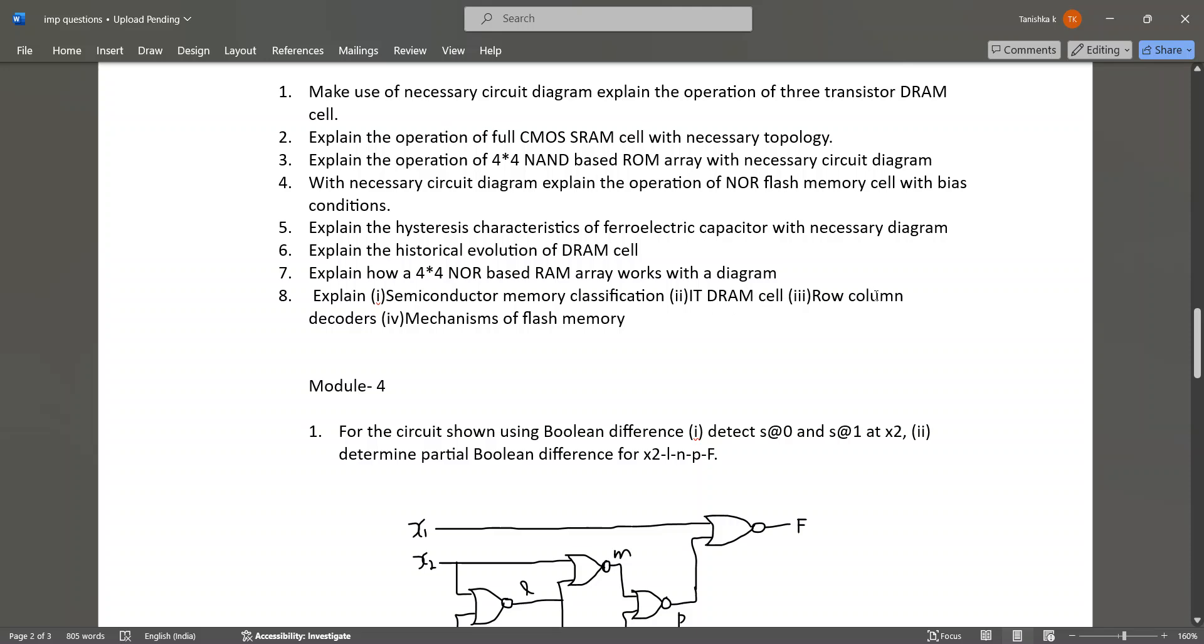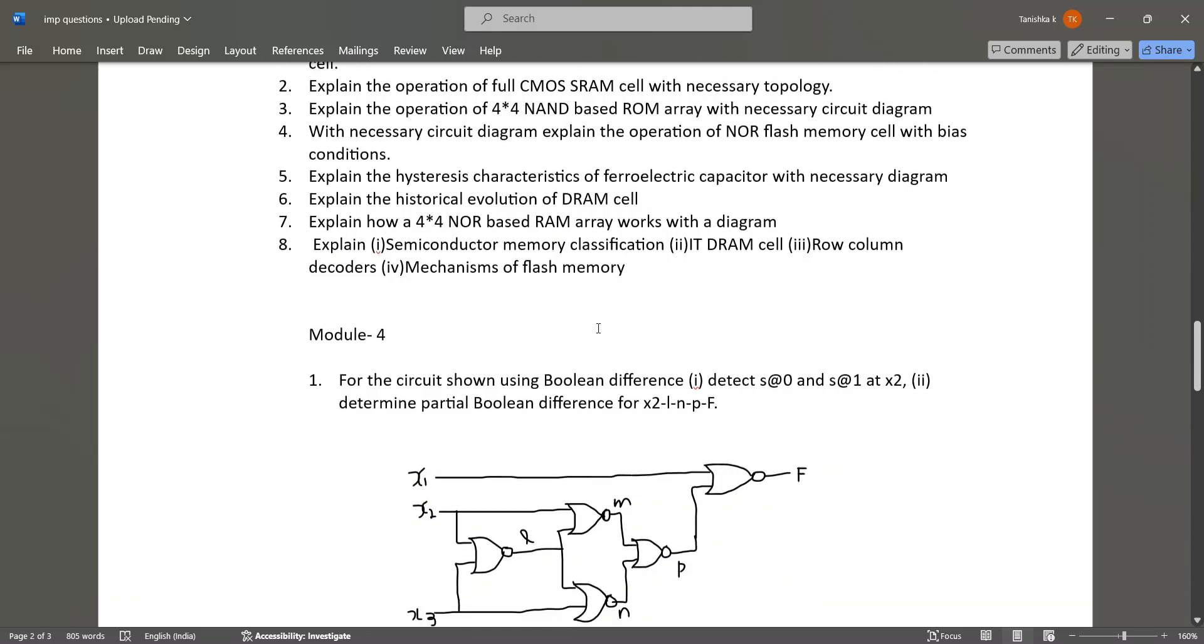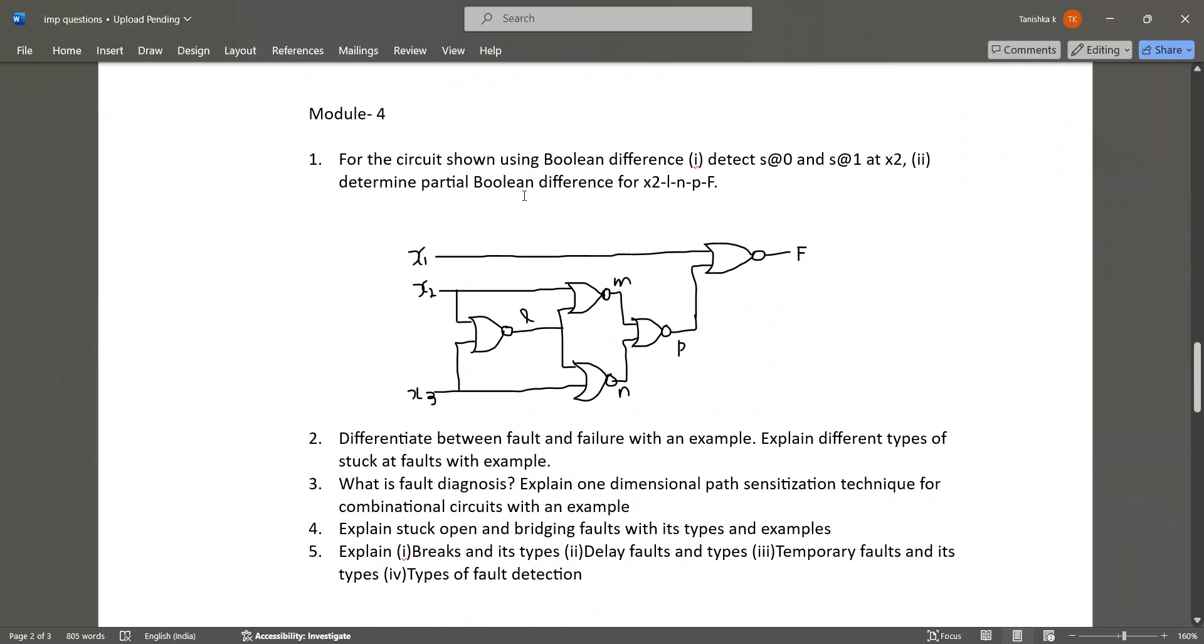In Module 4, problems like for a circuit using Boolean difference, you have to detect the stuck-at-0 and stuck-at-1 fault at x2 and determine partial Boolean difference. This type of problem may be asked for like 10 marks or more than 10 marks.